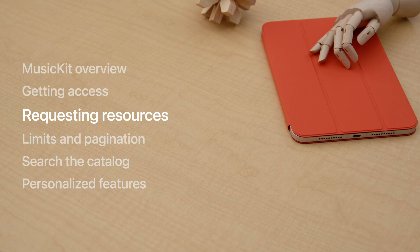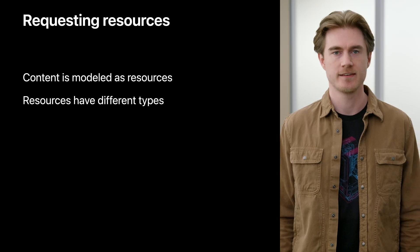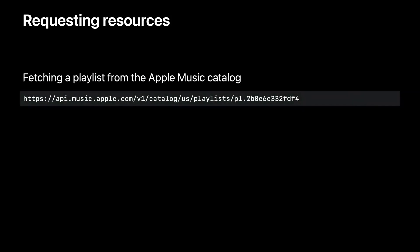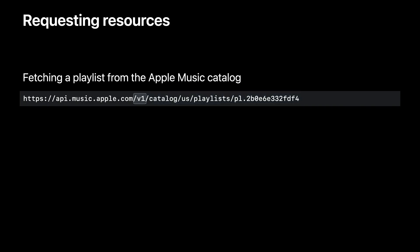Now, I will show you how to request resources using Apple Music API. Resources model Apple Music content such as artists, albums, songs, playlists, and more. Each has its own corresponding type. Resources can be fetched from Apple Music API endpoints through discovery features like search or by using their identifiers. Here is an example request URL to fetch a playlist resource from the API using its identifier. Apple Music API is hosted at api.music.apple.com. The path of the URL uses a RESTful pattern and represents the location for a resource or feature. The first element in the location is the version of the API, which is currently version 1. New versions may become available when significant changes are introduced. Versions maintain backwards compatibility with existing calls, even as enhancements to resources and new features are made available.